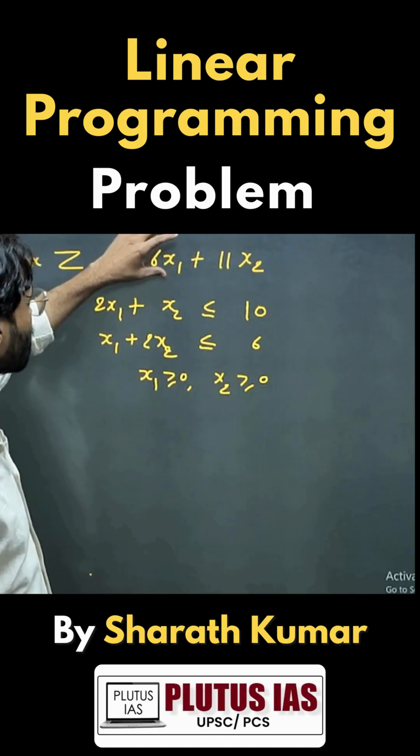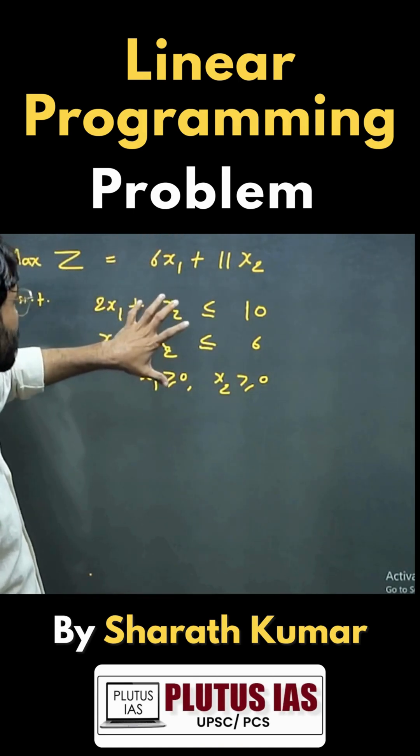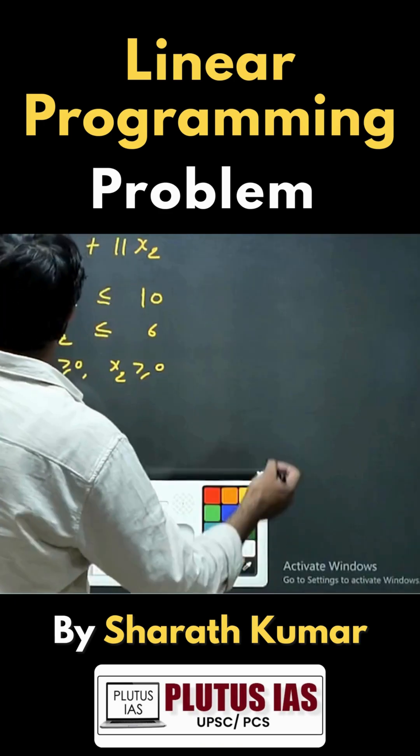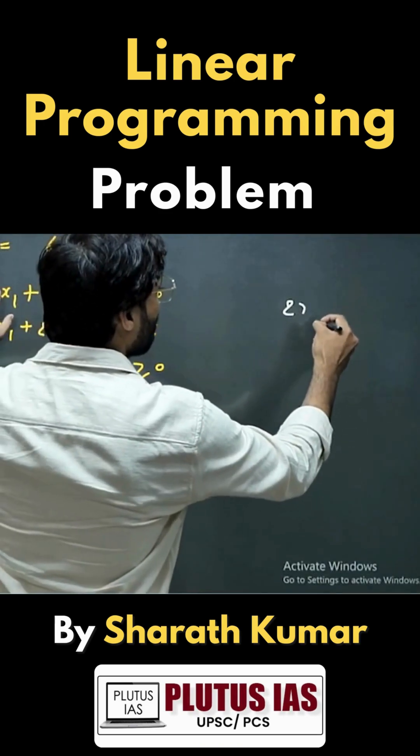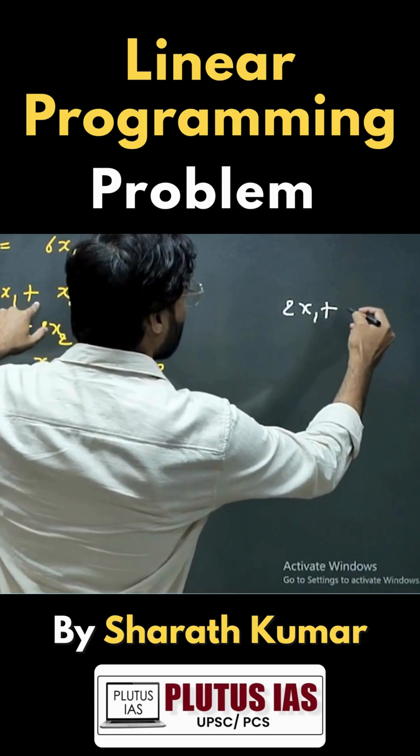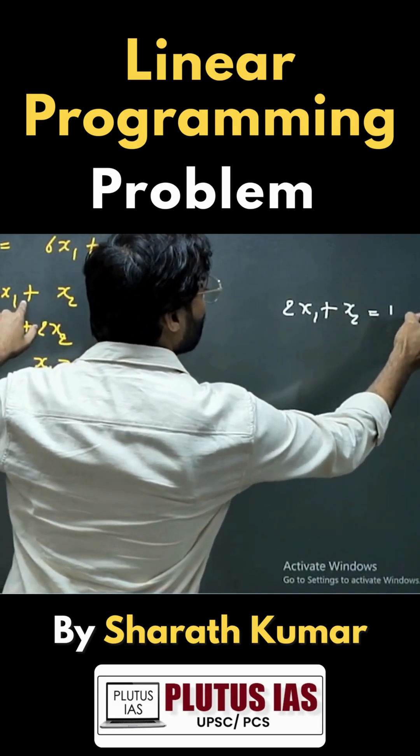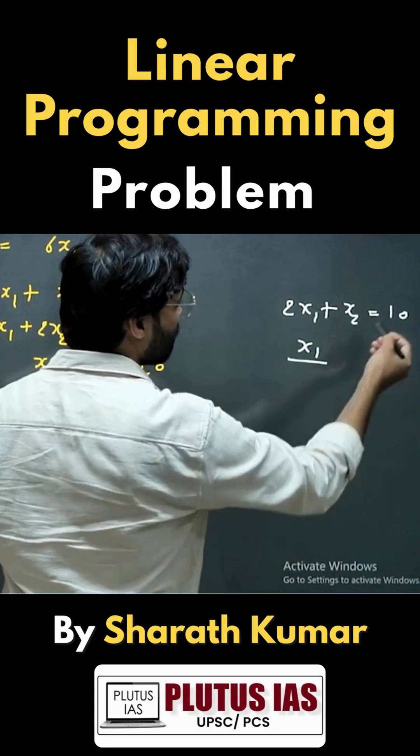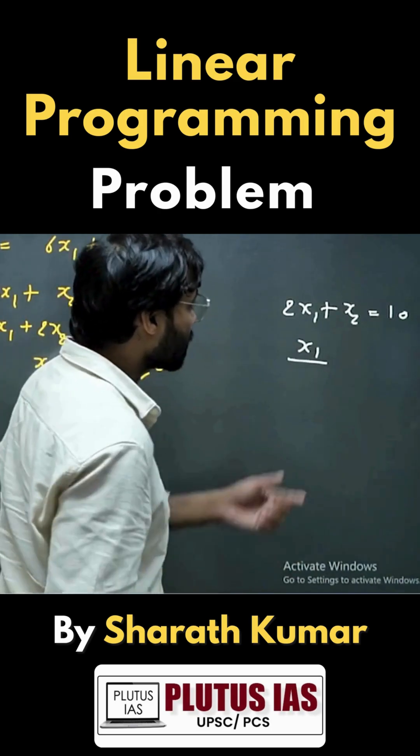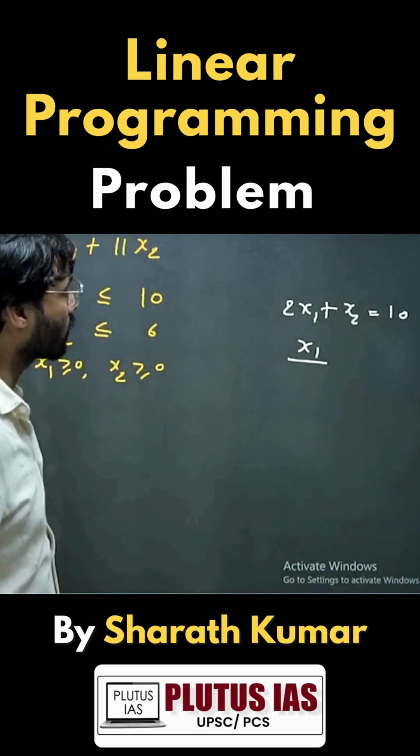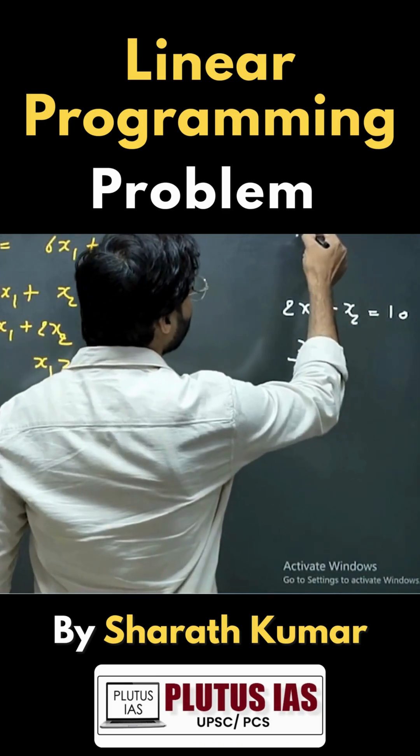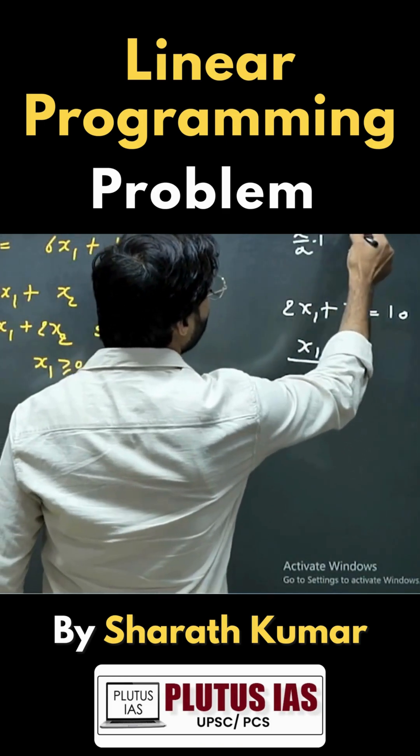So that is the objective function we have to maximize under these constraints. The equations here are actually 2x1 plus x2 equal to 10, and we can change it into the intercept form. That will be x1 divided by 5 plus x2 divided by 10 equal to 1. The intercept form is x upon a plus y upon b equal to 1.